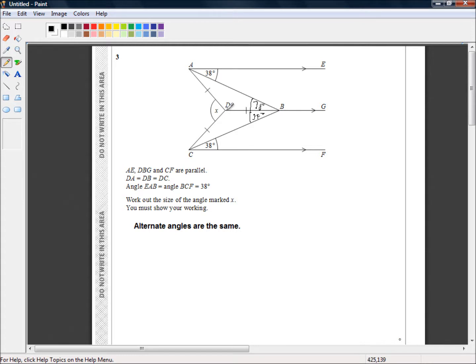Now what we have here, this length here is the same as this length here, which makes this shape here an isosceles triangle. So I'm going to also type base angles on an isosceles triangle are the same.